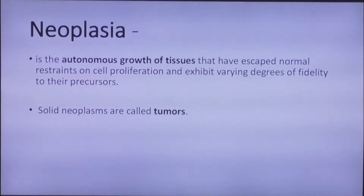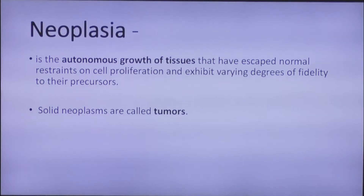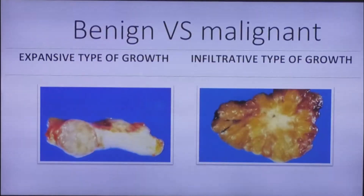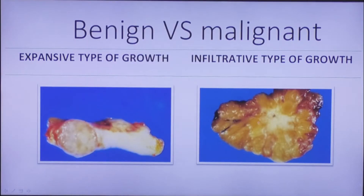Tumors are derived from cells that normally maintain a proliferative capacity. Thus, mature neurons and cardiac myocytes do not give rise to tumors. When we hear something about a tumor, the first question we are interested in is whether it is benign or malignant, and how we can distinguish it microscopically.